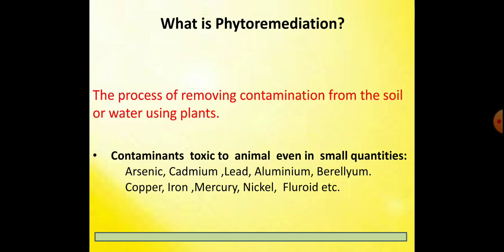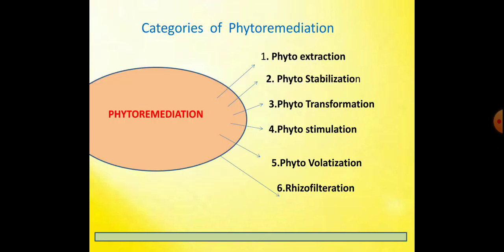Phytoremediation is nothing but removing contamination from the soil or water using plants. The contaminants include arsenic, cadmium, lead, aluminium, beryllium, copper, iron, mercury, nickel, fluoride, and some salts from saline soil. Why remove these elements? Because these contaminants are toxic to animals even in small quantities.